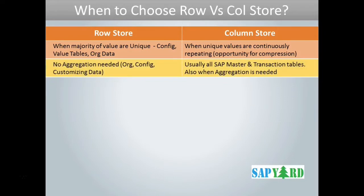The next criteria is: when you know for sure you do not need any aggregation like sum, average, maximum, or minimum for the tables, then blindly go for the row store. For example, say you have plant numbers 4121, 4200, and 4455. Even though these plant values are numbers, you will never need to add them or do an average of plant numbers — it does not make sense. In such cases where aggregation is not needed, go for row store.